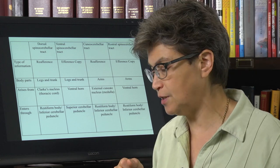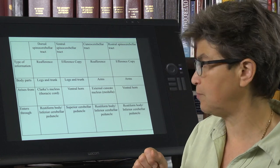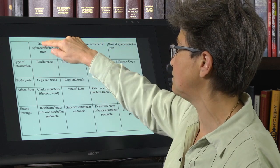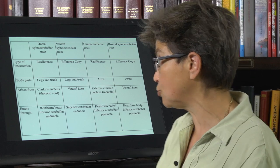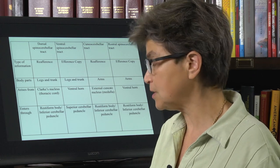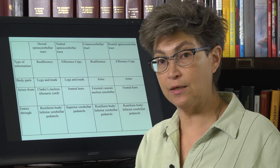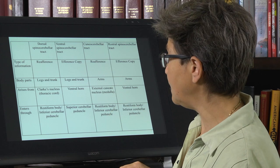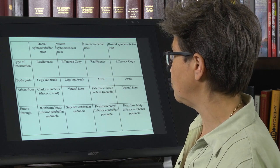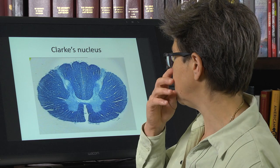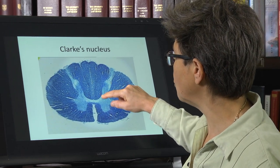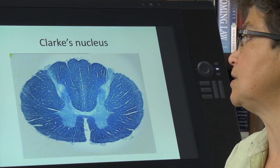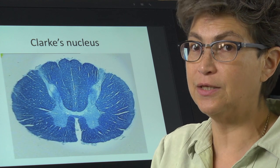The source of input for the cuneocerebellar tract is the external cuneate nucleus. For the dorsal spinocerebellar tract, which carries reafference, the information comes in through the dorsal columns and instead of going all the way up to the medulla, it travels to a structure in the thoracic cord called Clark's nucleus.